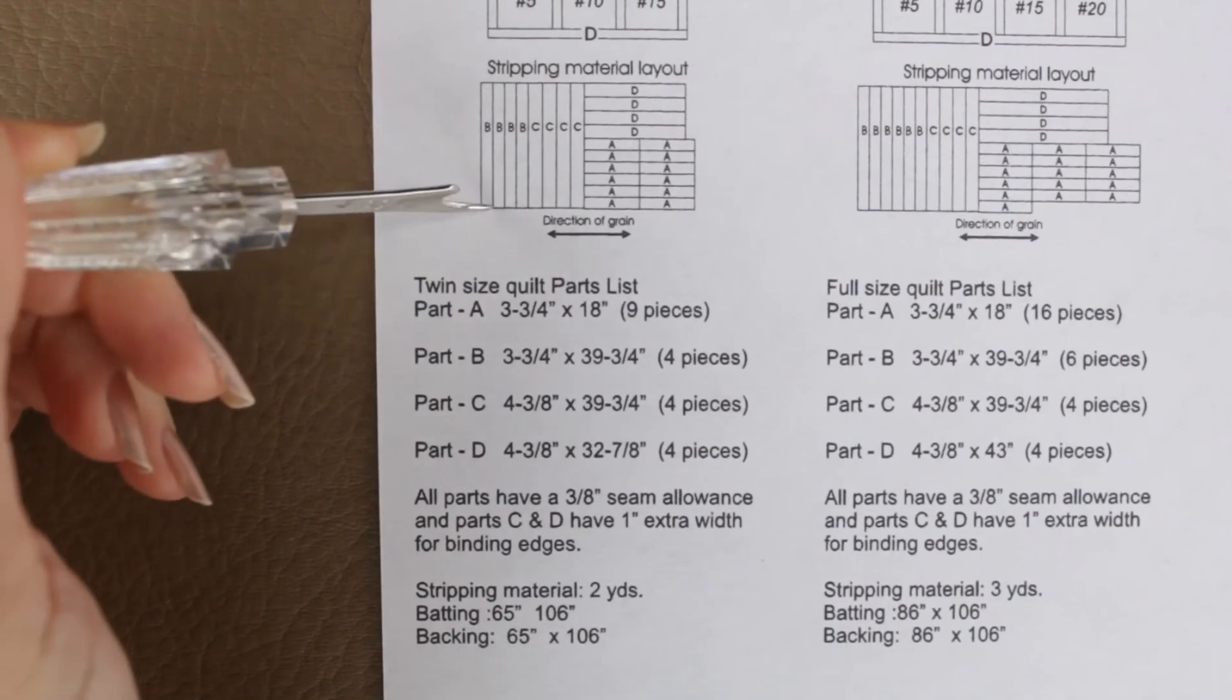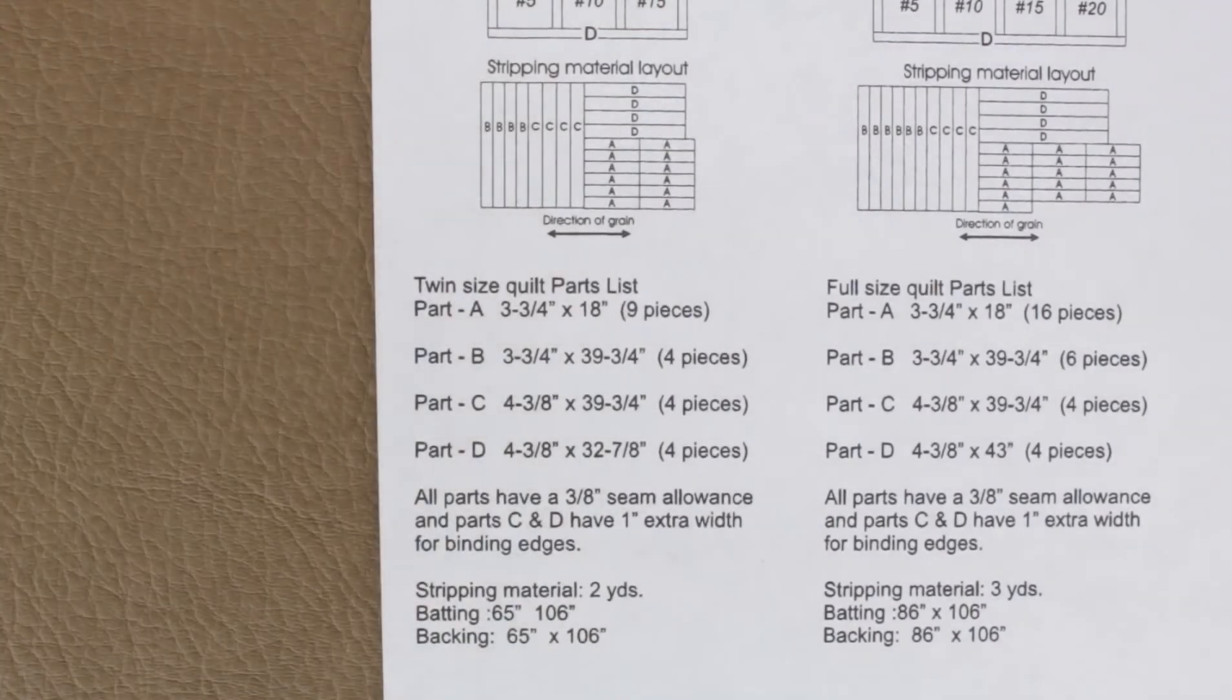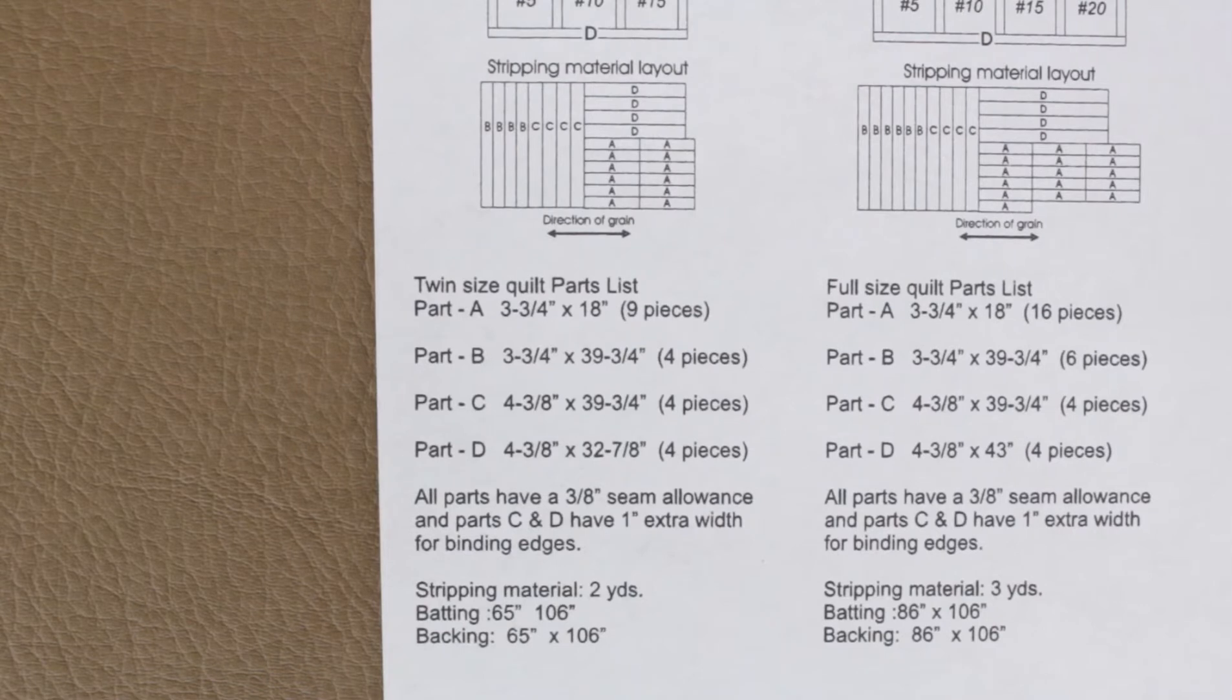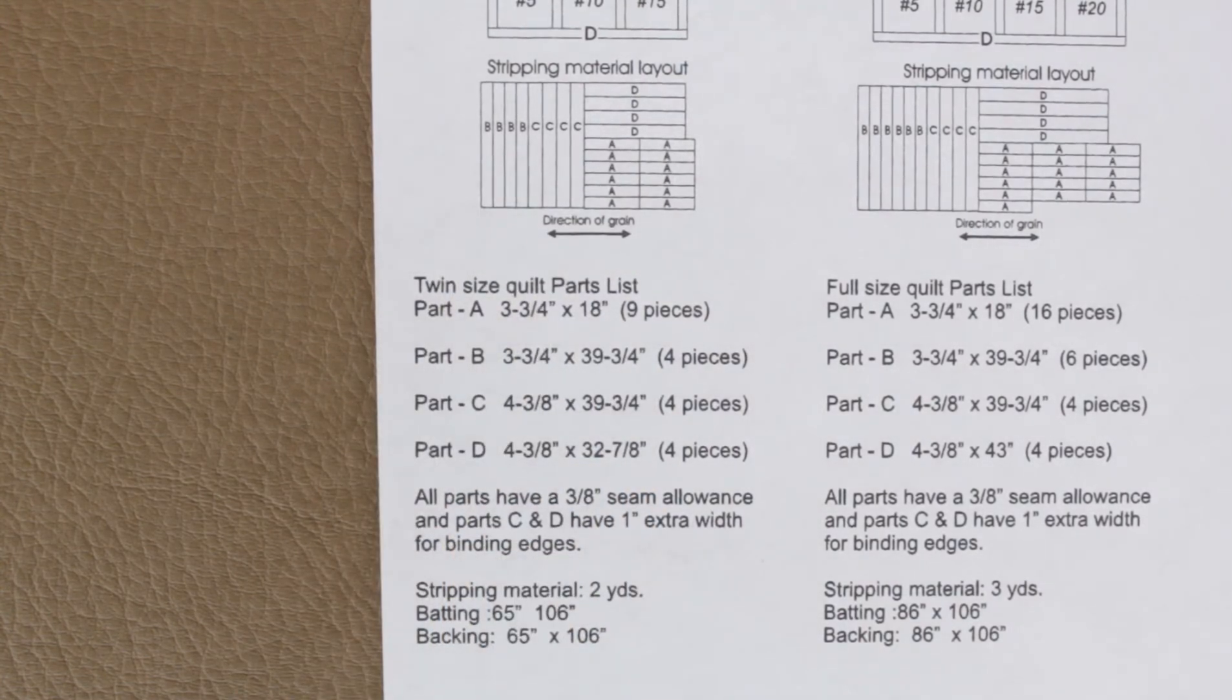Here we have B, 3-3/4 by 39-3/4 of an inch. They're also giving us the seam allowance, which is included in that. So each strip has a 3/8-inch seam allowance. And they're telling us that if we do the same layout they recommend up here, we need 2 yards of 45-inch width fabric.